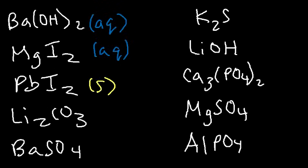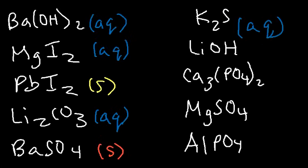Barium sulfate — sulfates are generally soluble, but barium is an exception, so this is going to be insoluble. Potassium sulfide — potassium is a group 1 metal; once you see a group 1 metal, automatically it's soluble, so aqueous. Lithium is also a group 1 metal, so that's going to dissolve in water.